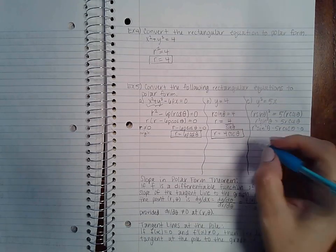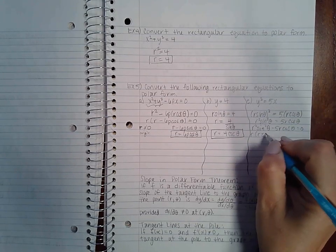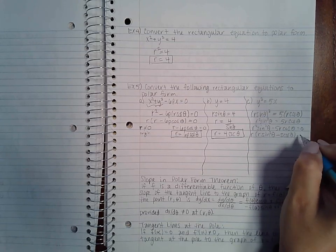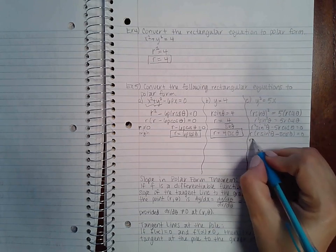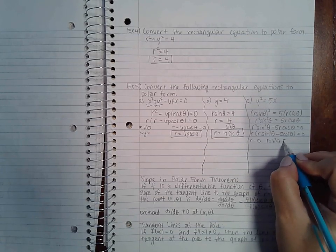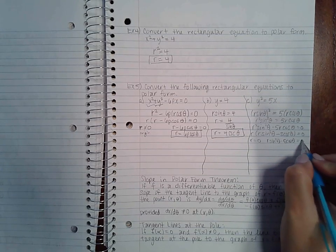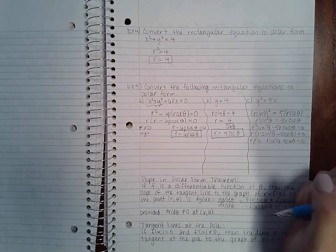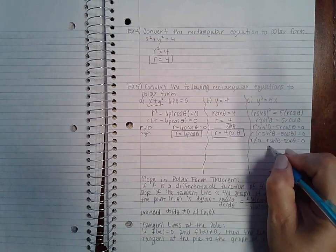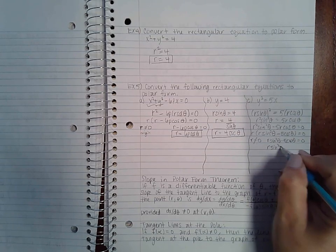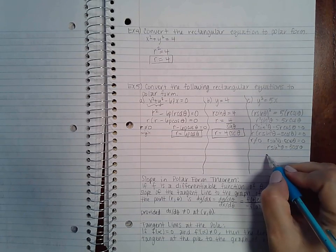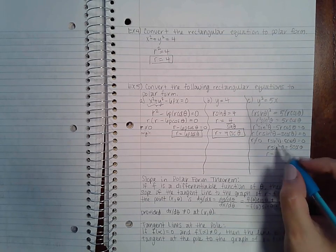If we set r equal to zero, r sine squared theta minus five cosine theta equal to zero, we're just going to get the pole. So that's not really going to give us the equation. So if I keep solving for r, I will get five cosine theta on the right hand side. Divide both sides by sine squared.